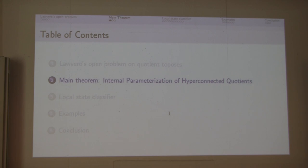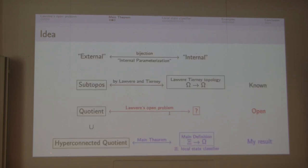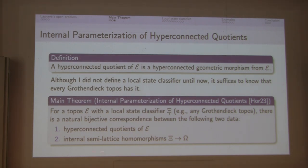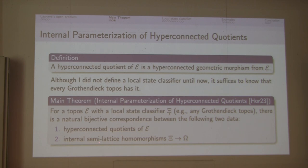Let me talk about my main theorem in terms of parameterization of hyperconnected quotients. By hyperconnected quotient I mean a hyperconnected geometric morphism from a given topos. Every Grothendieck topos has a local state classifier. What I proved is: for topos E with its local state classifier, there is a natural bijective correspondence between hyperconnected quotients and internalized morphisms from this object — the local state classifier — to the sub-object classifier. This is my main theorem.